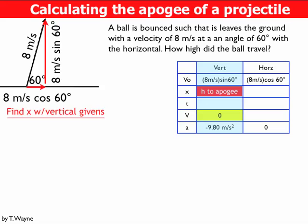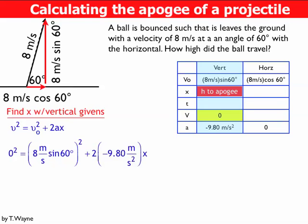So if I look at my variables v0, x, v, and a, the relationship I want is v squared equals v0 squared plus 2ax. Plugging in my numbers for the initial velocity and the acceleration, I find that x is 2.4 meters. So this ball bounced 2.4 meters from the lowest height. That's the height to apogee, or the answer to how high the ball traveled.